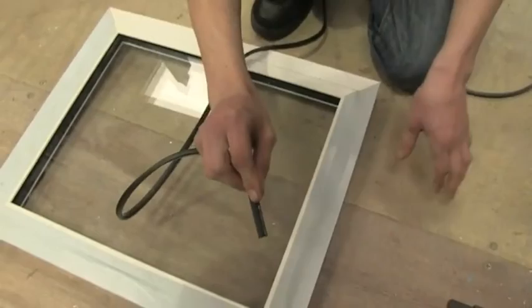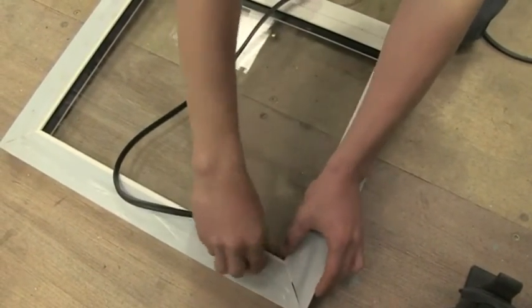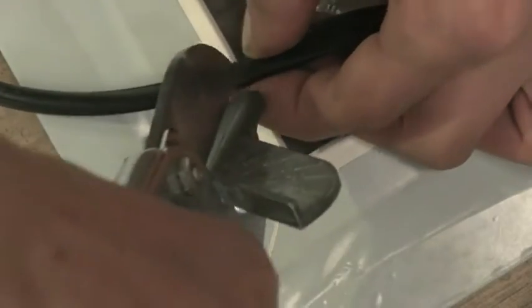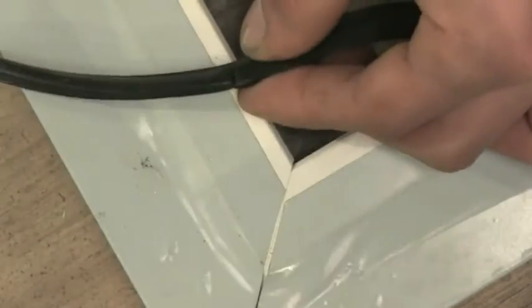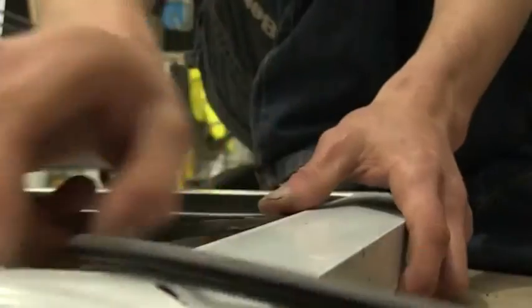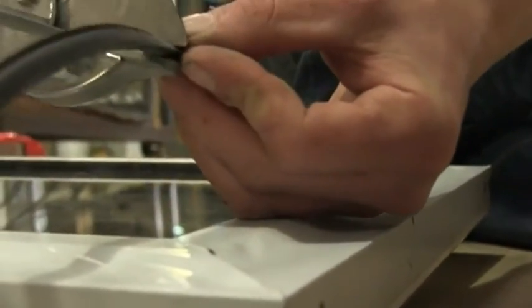Take the wedge gasket and start at the corner. Push it in between the glazing and aluminium vent. Snip the wedge gasket internally at the corners. Cut wedge level at final corner.